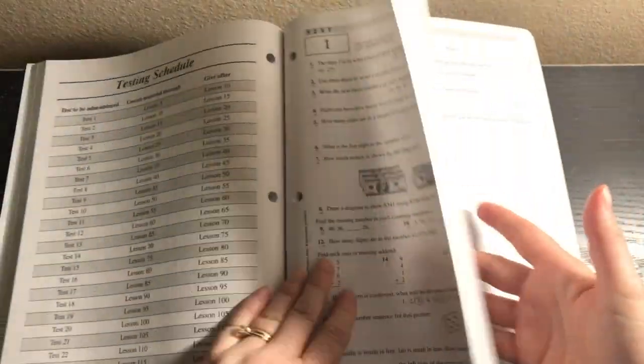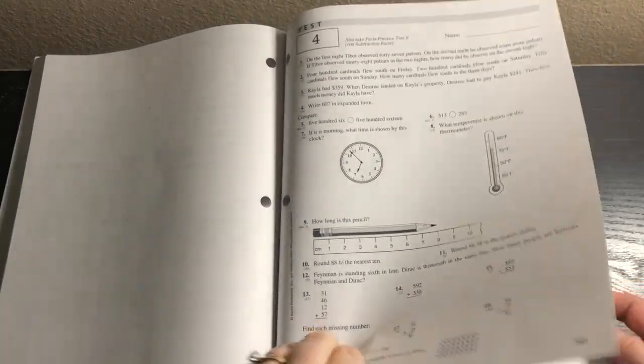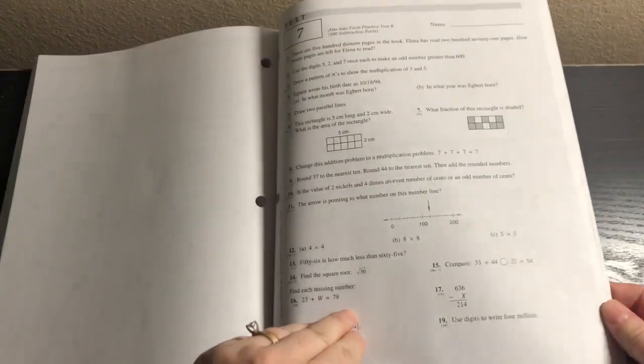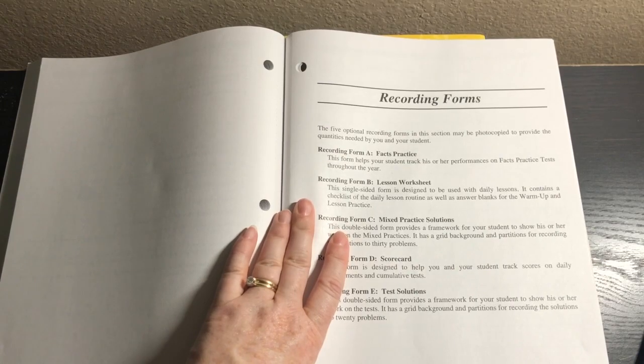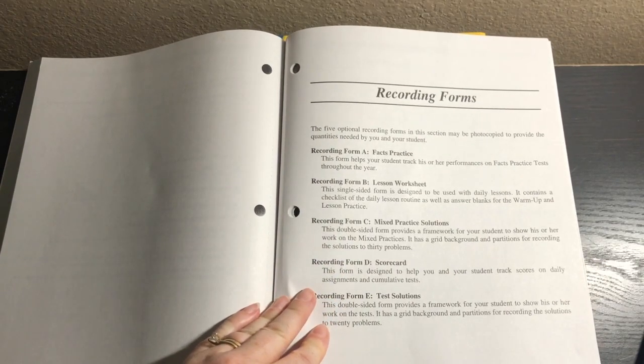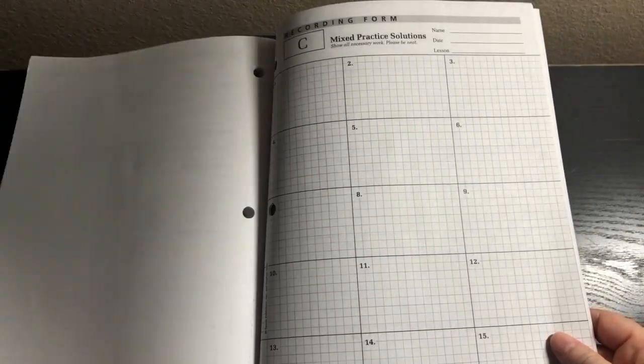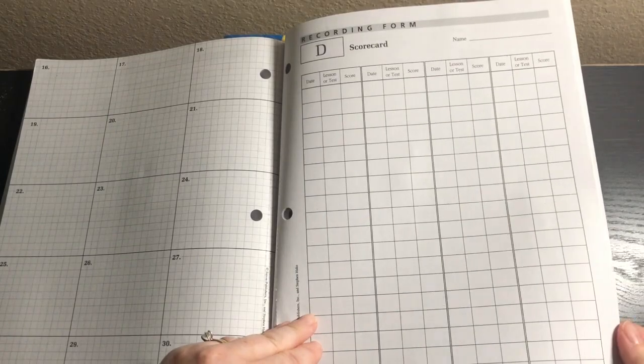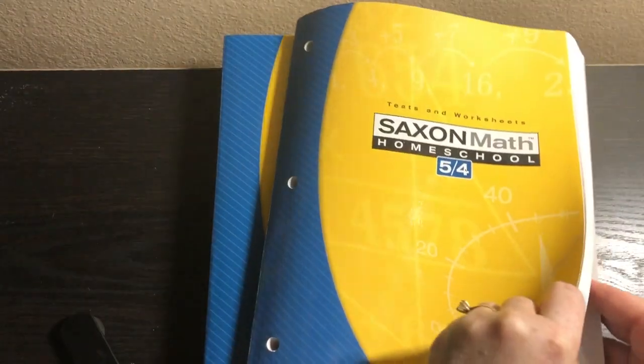Here's what the tests look like. So 20 problems. Kids actually tended to like test day when I was teaching because there was less work that day. And then let me show you these in the back, the recording form. We've got a facts practice form, a lesson worksheet, a mixed practice solutions, a scorecard and test solutions. So if you want to keep track of scores and things, you have to turn in a portfolio, that sort of thing, use this, but you also don't have to use these.